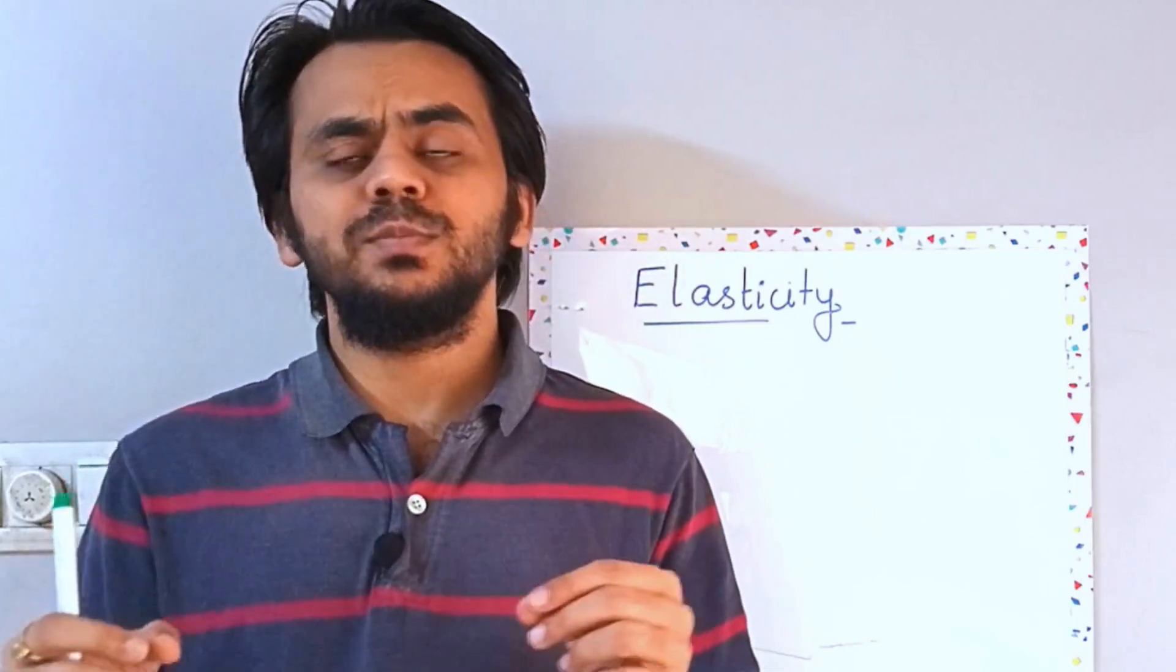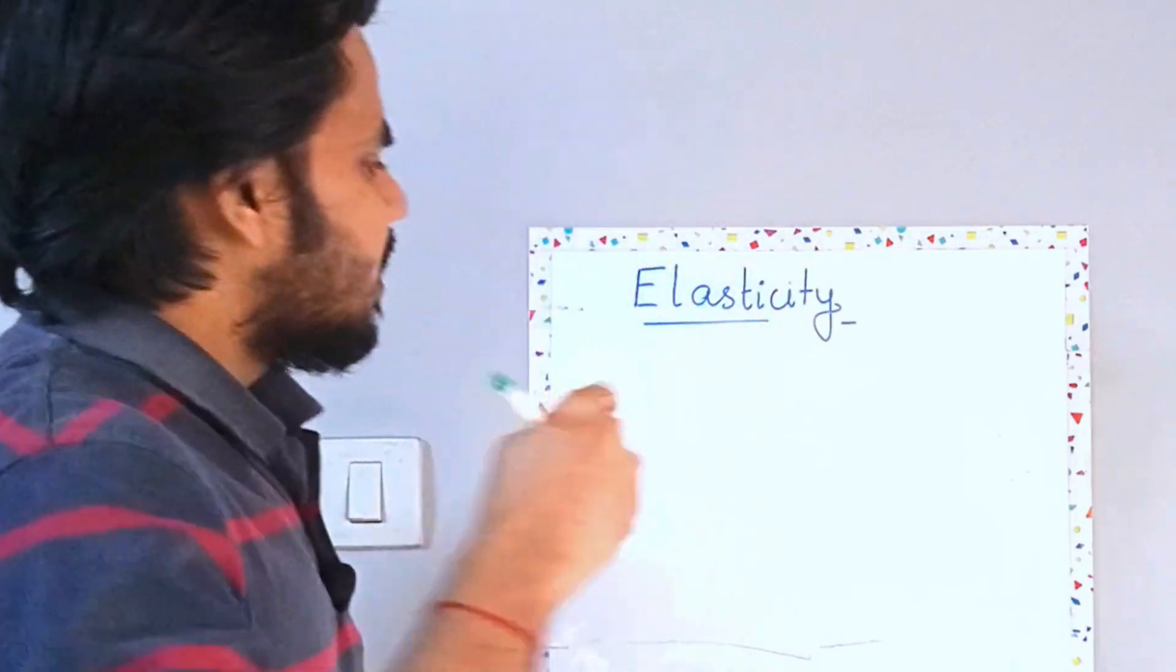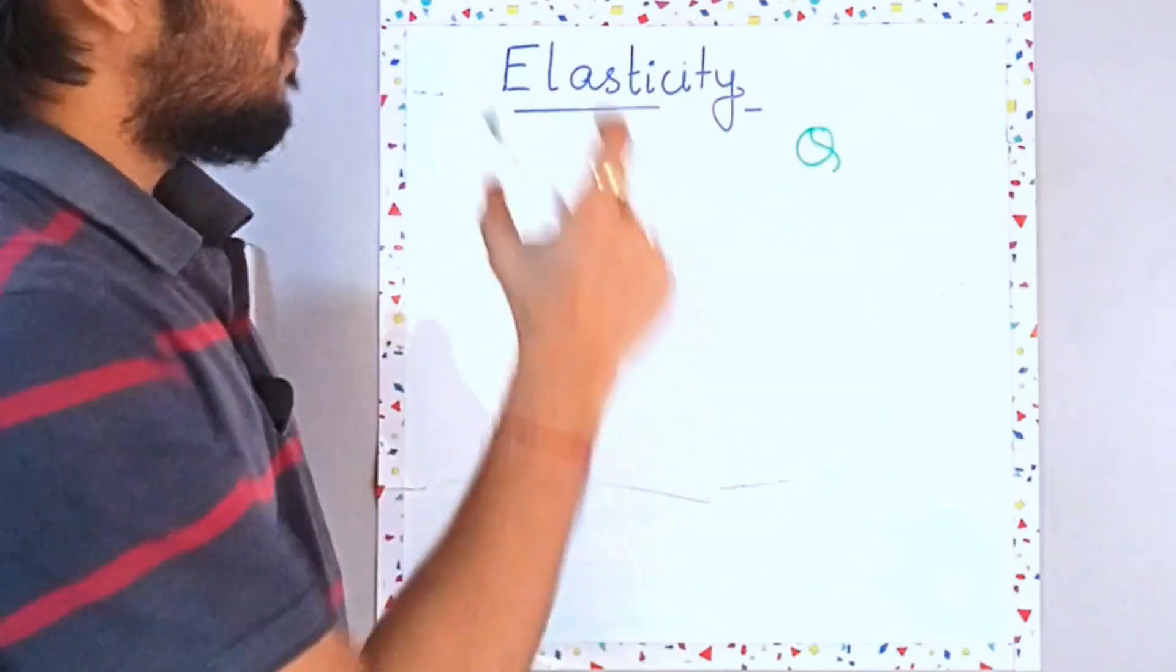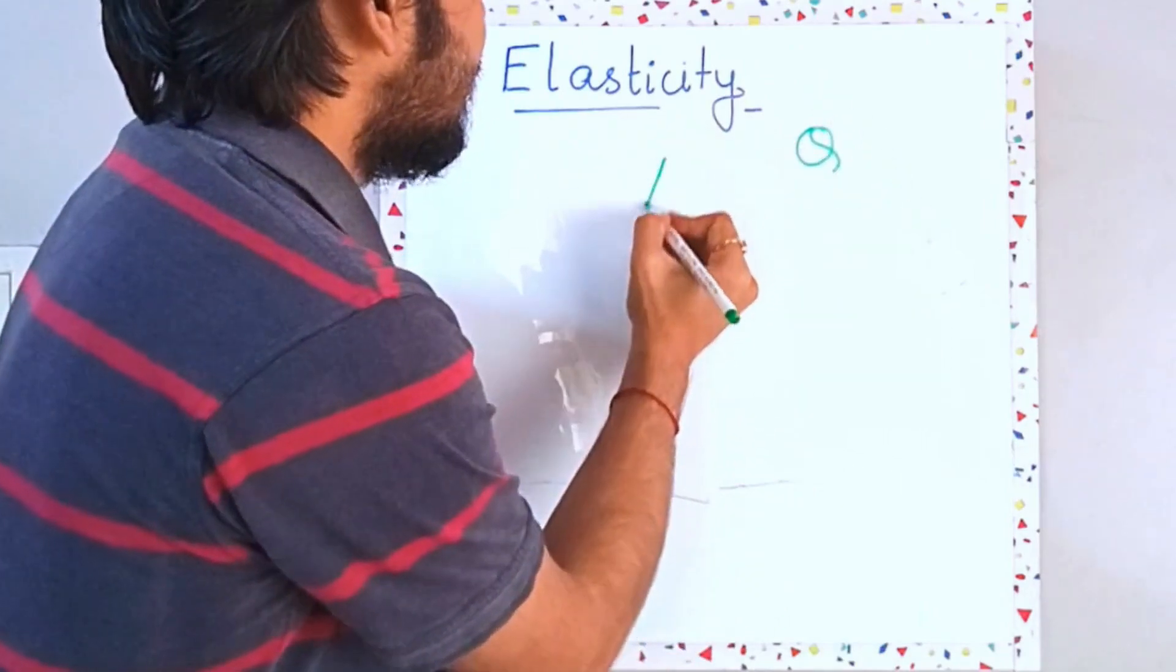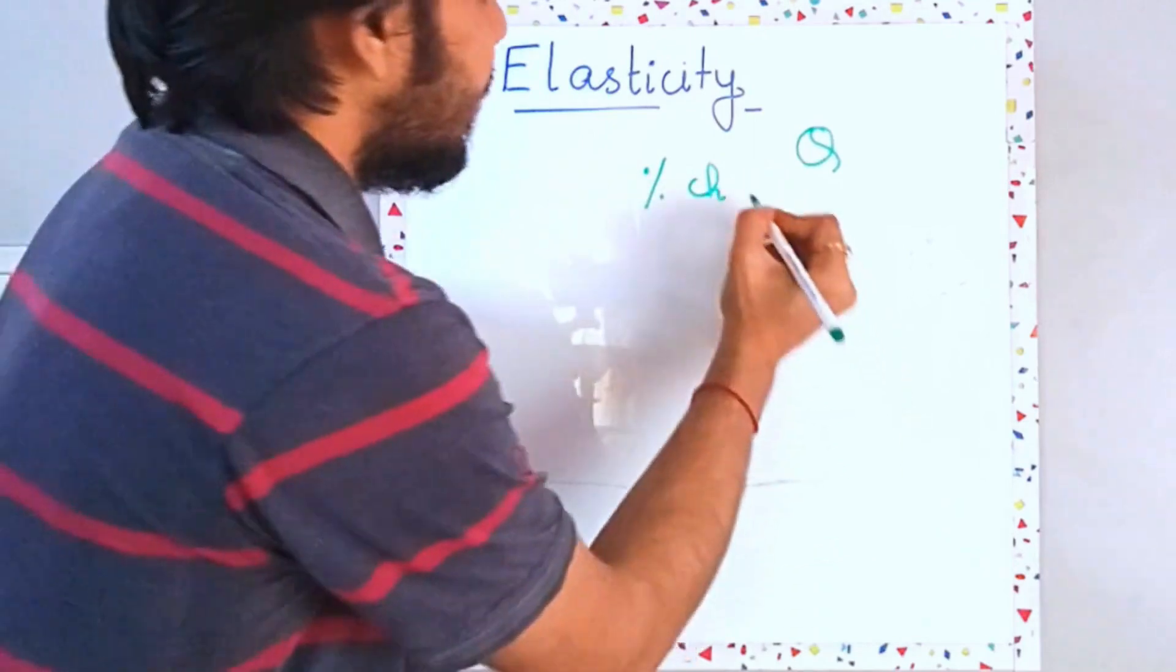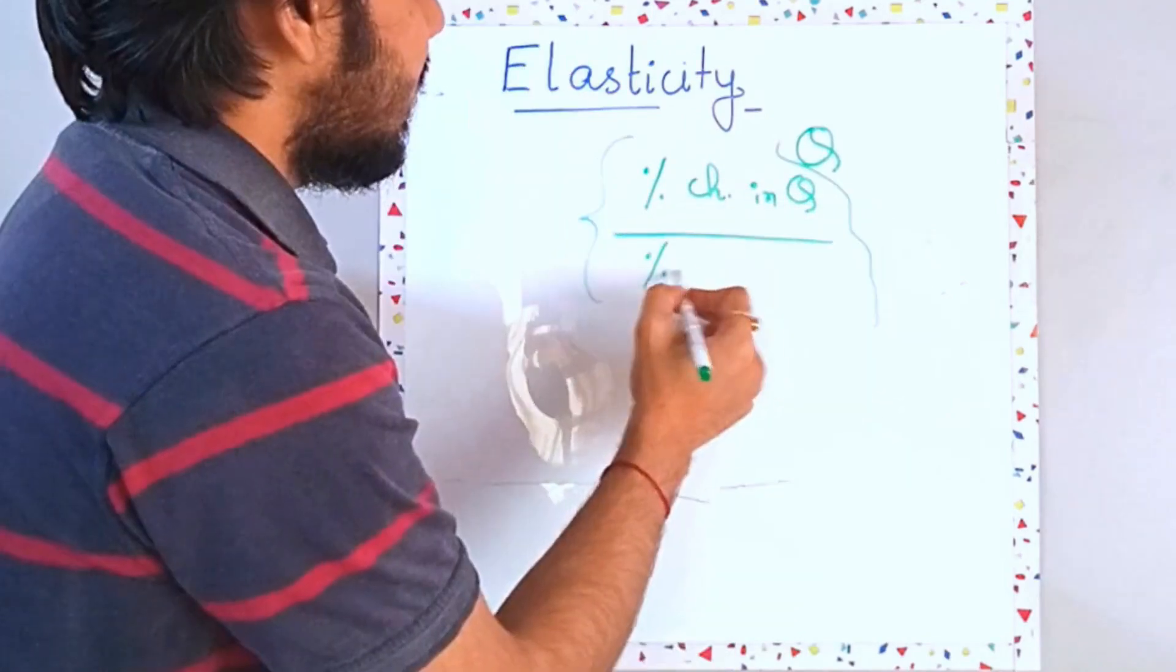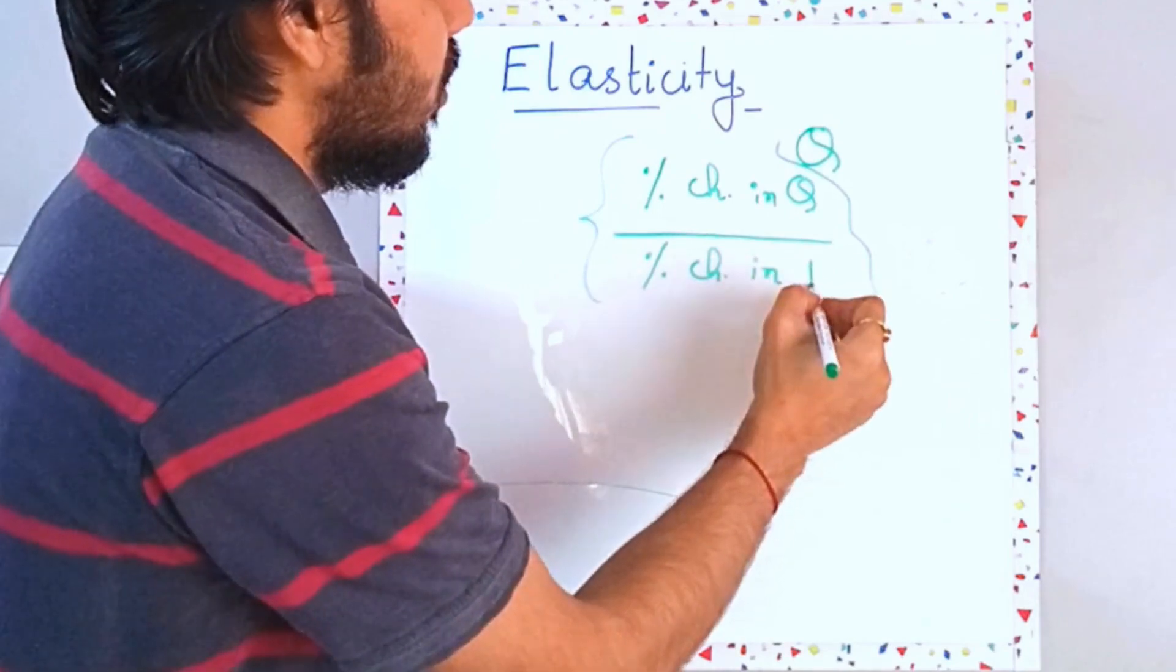Let's try to understand the concept of elasticity mathematically. When we talk about price elasticity of demand, let's denote the demand by capital Q. So price elasticity for this capital Q is essentially percentage change in Q upon percentage change in P or simply price.